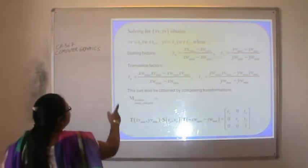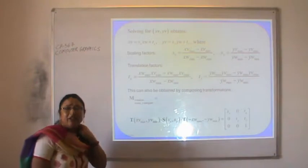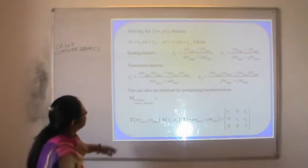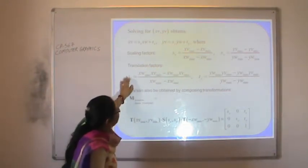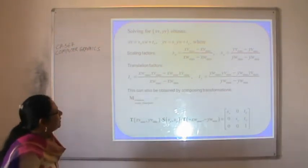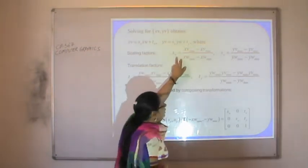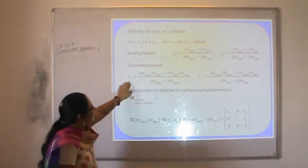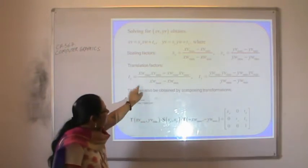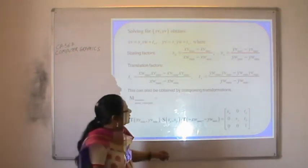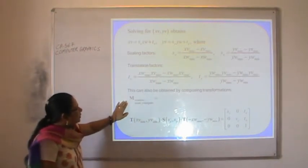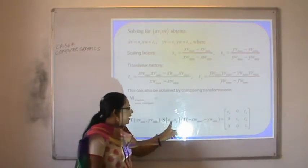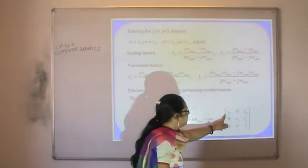Solving for xv and yv — the viewing x and y coordinates — we get: xv = sx·xw + dx and yv = sy·yw + dy, where sx and sy are the scaling factors along the x-axis and y-axis respectively, and dx and dy are the translation factors along x and y. This can also be obtained by composing transformations: M (window to normalized viewport) = translation, then scaling, then inverse translation, yielding the composite matrix.